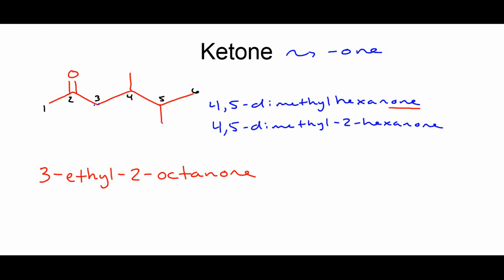Let's draw 3-ethyl-2-octanone. I make an eight-carbon chain, place an ethyl branch on the third carbon, and put my ketone on the second carbon. Those are ketones.